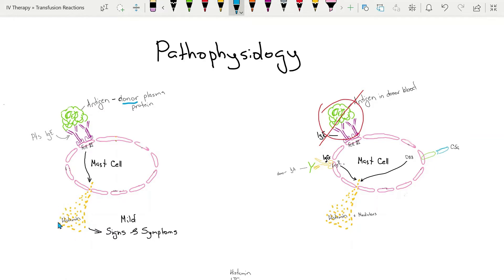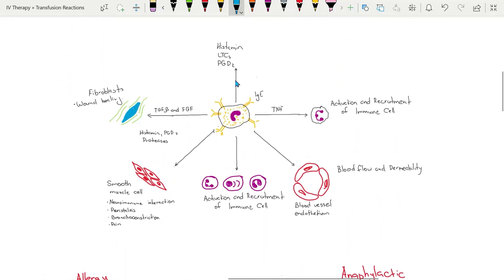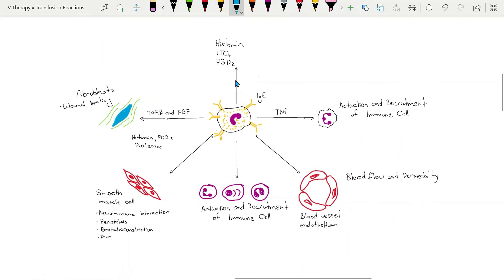Inflammatory cytokines and histamine are released leading to the signs and symptoms. This is what the mast cell does by releasing histamine and cytokines.